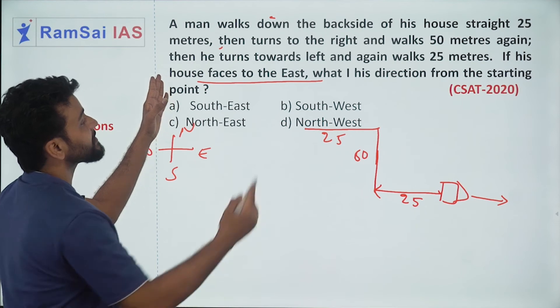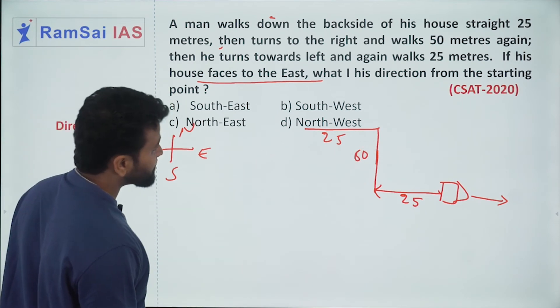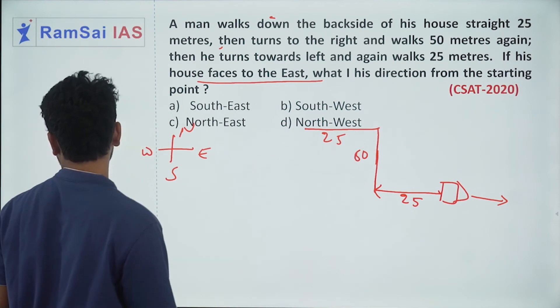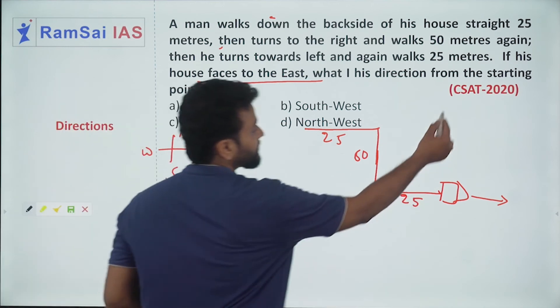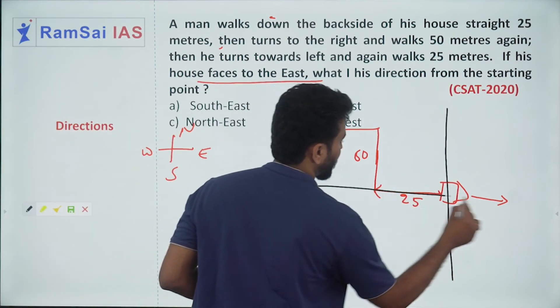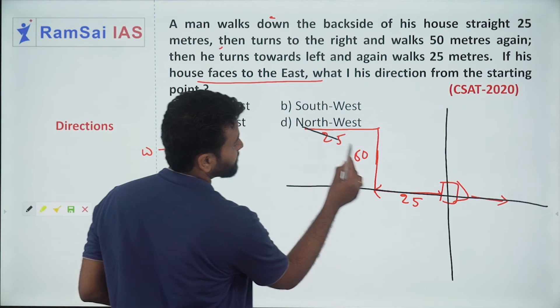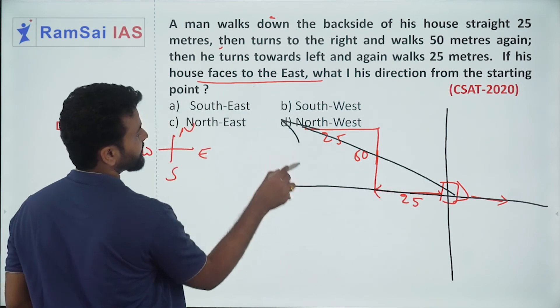If his house faces east, then in which direction from the starting point? So, draw a coordinate at the starting point. Connect the starting point and ending point. He is in which direction now?